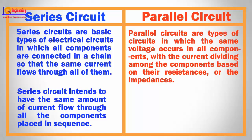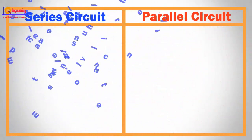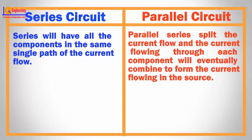Series circuits tend to have the same amount of current flow through all the components placed in sequence. Parallel series components are not in sequence but they are parallel to each other. Series will have all the components in the same single path of the current flow. Parallel series split the current flow and the current flowing through each component will eventually combine to form the current flowing in the source.